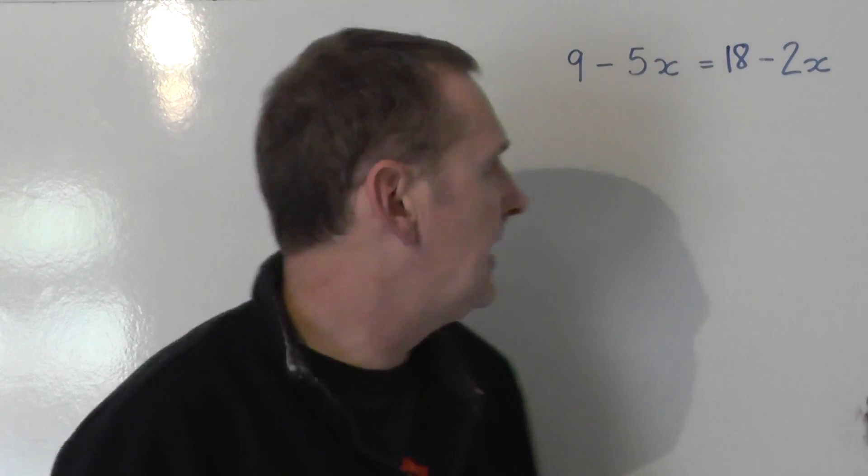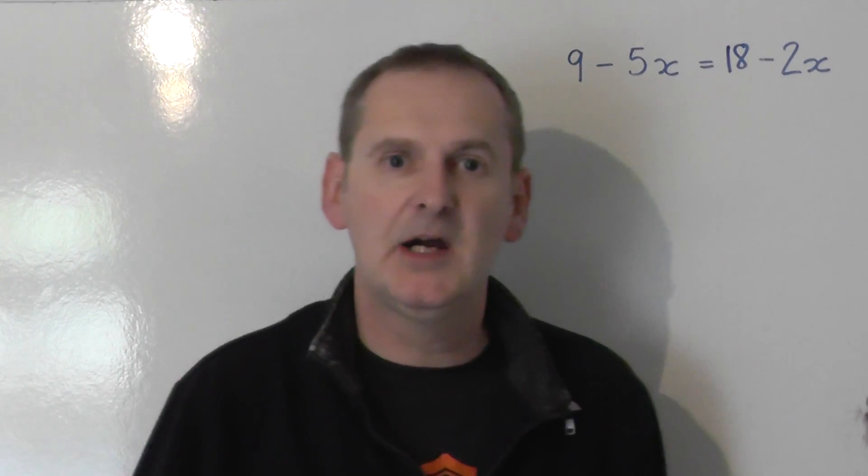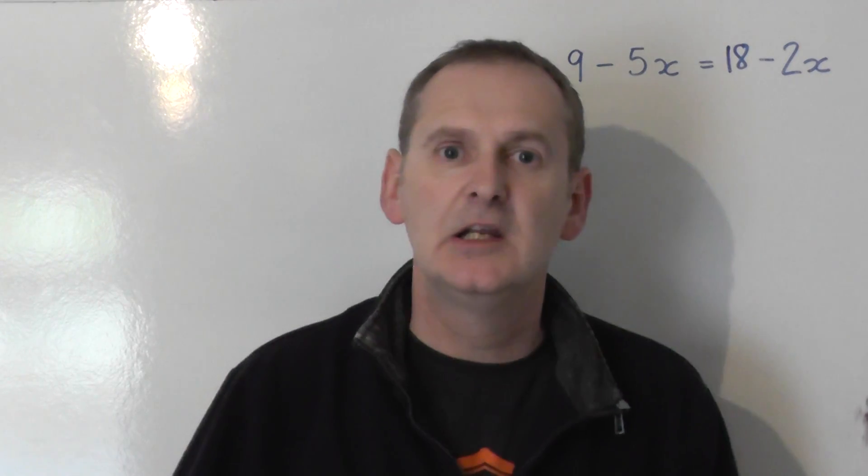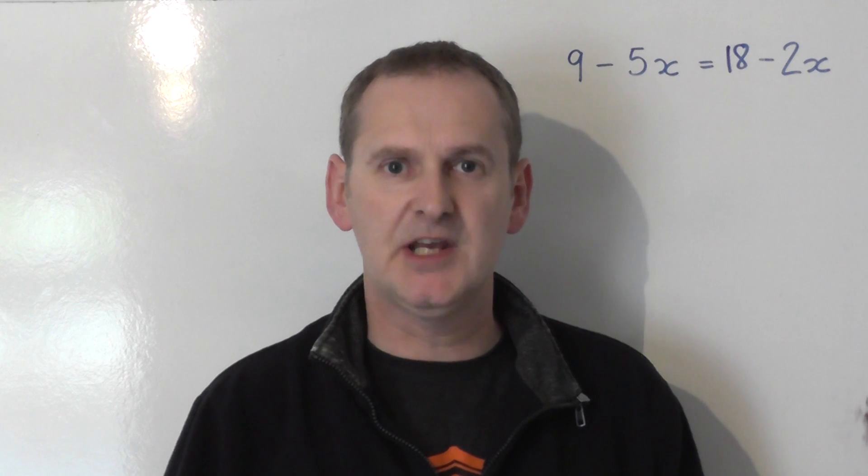Let's solve the equation 9 minus 5x equals 18 minus 2x. We've got x's on both sides of the equal sign. Let's collect the x's on the side with most x's.